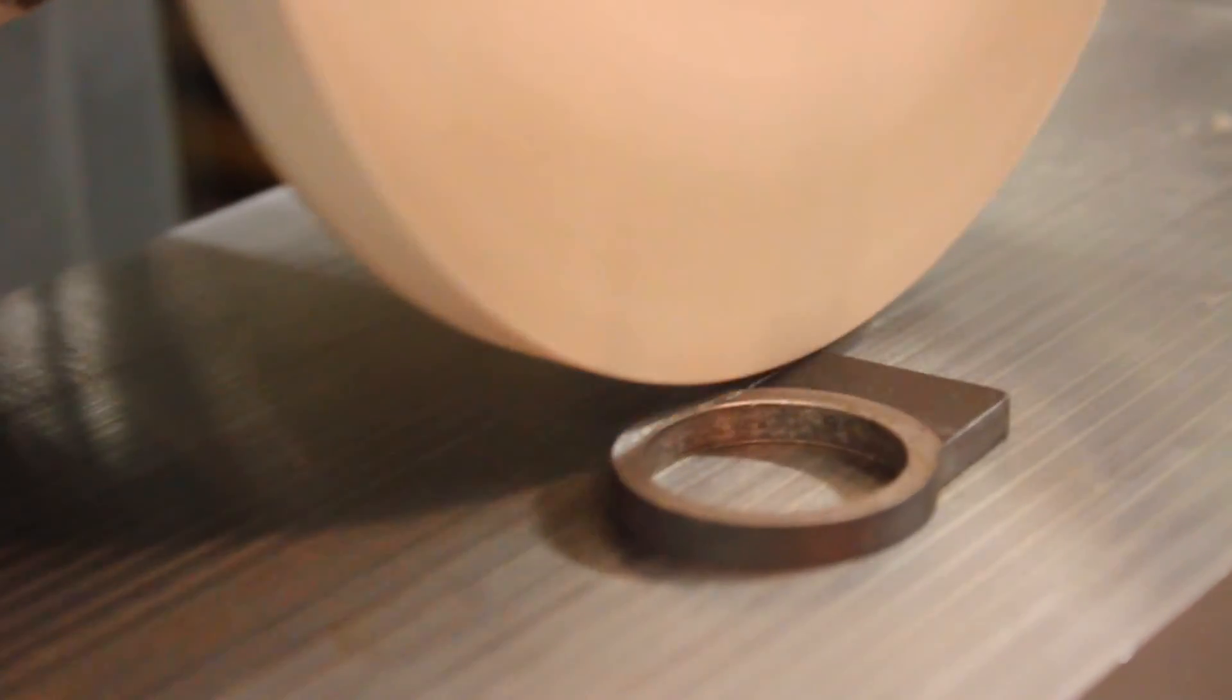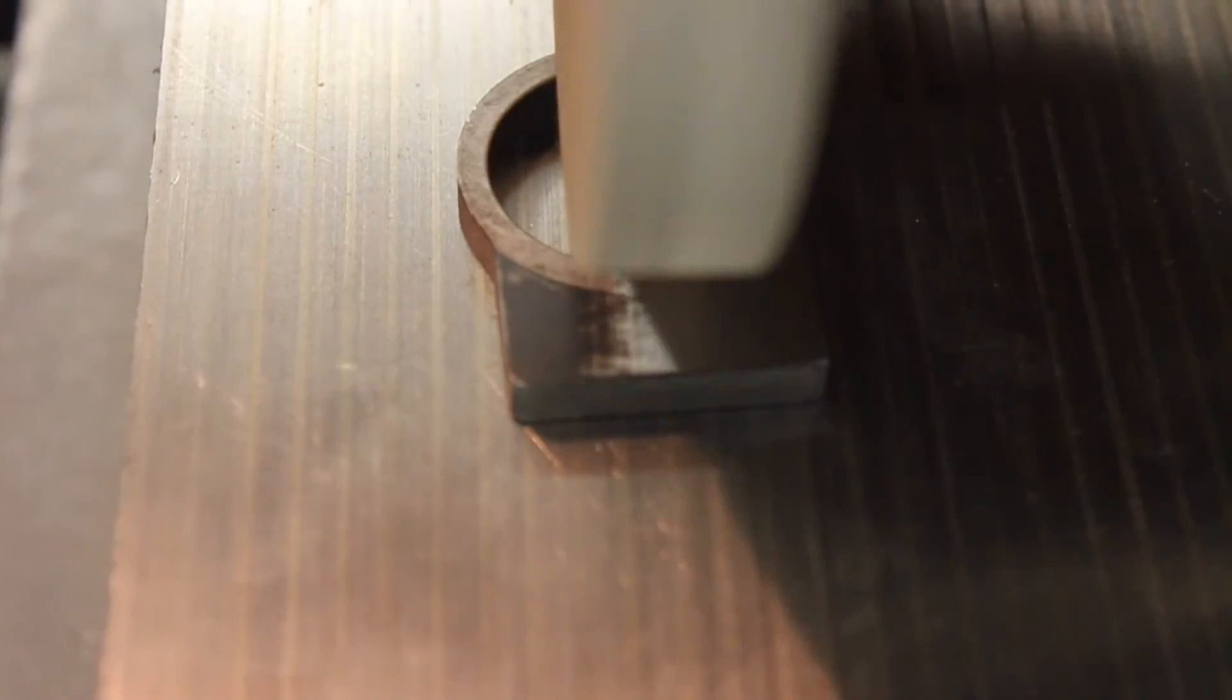And a good surface grinder can get a part accurate within one-twentieth of a human hair, if not more. The process begins by placing the recoil lug on the chuck and grinding it.